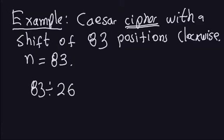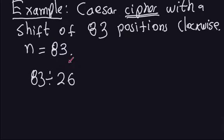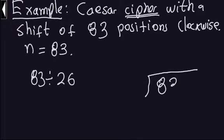Let's look at another example: a Caesar cipher with a shift of 83 positions clockwise. So n equals 83. The actual number of positions you have to move is not really 83 — you can move 83, but it's better to take 83 divided by 26, look at the remainder, and that tells you the actual number of positions to move clockwise.